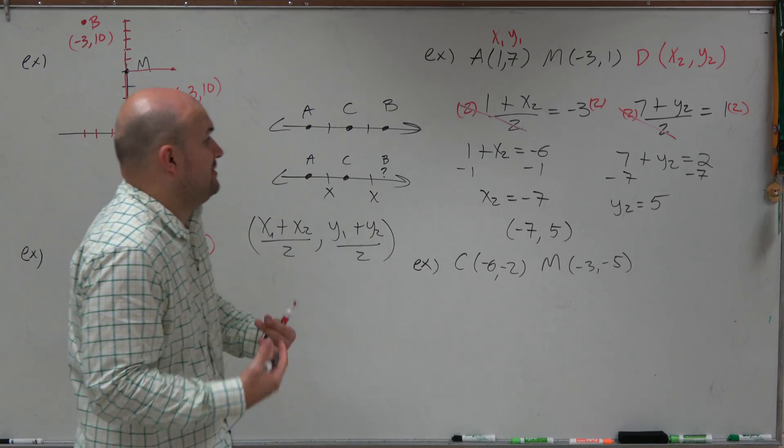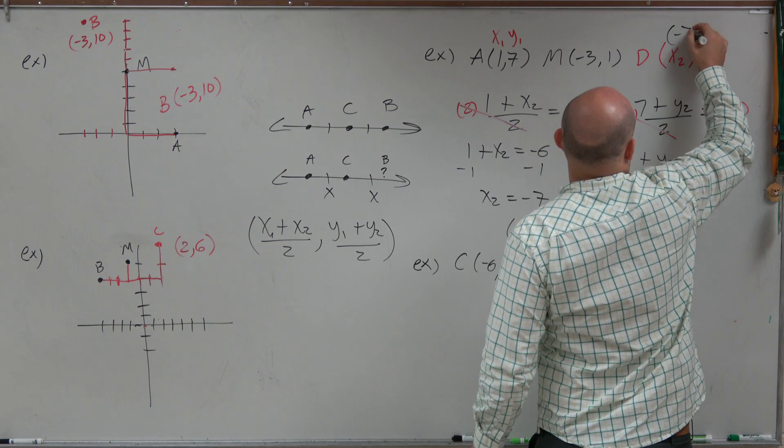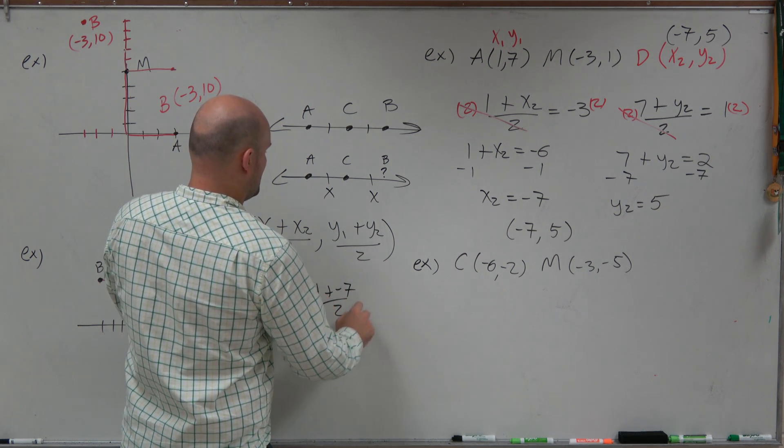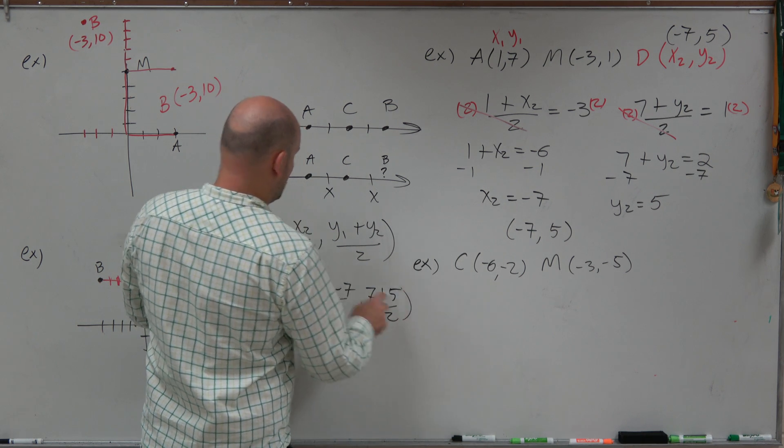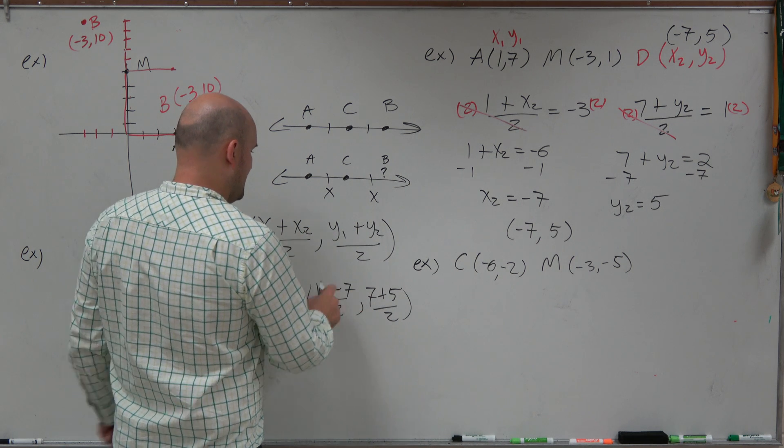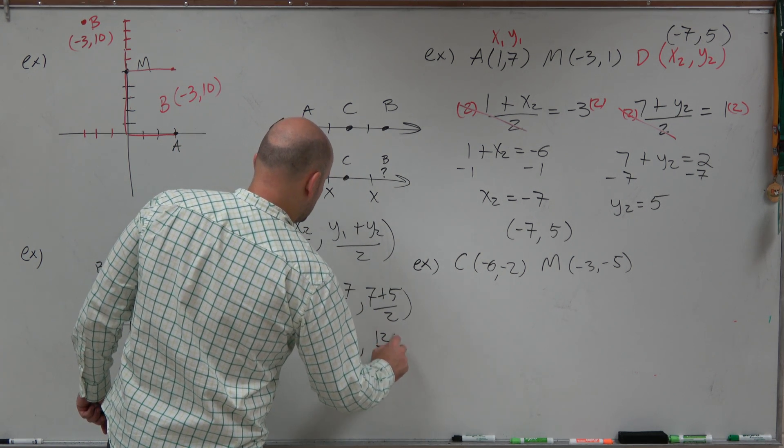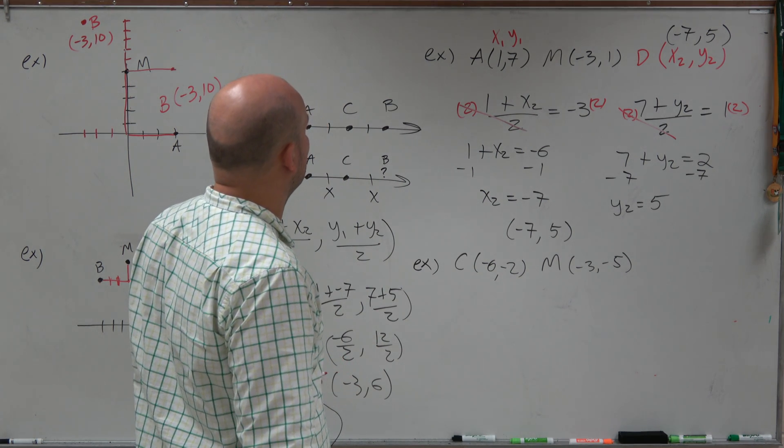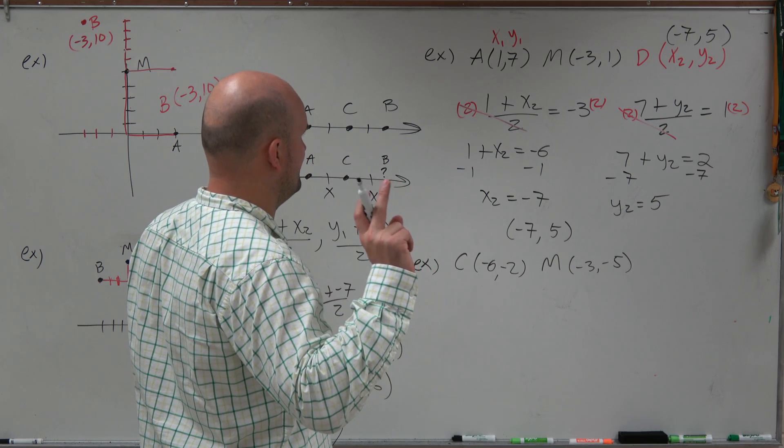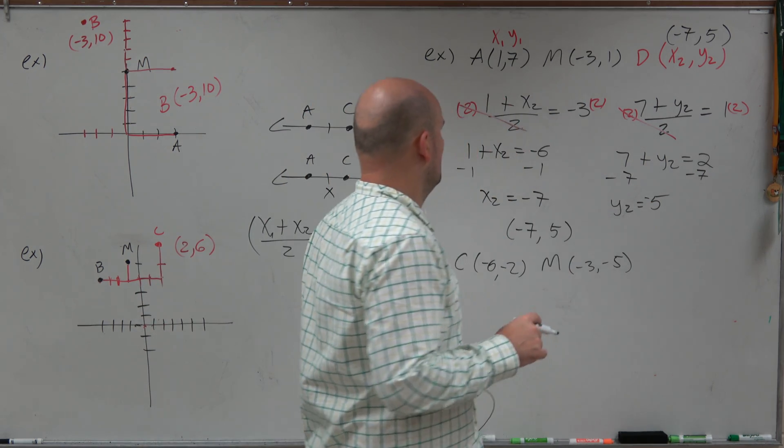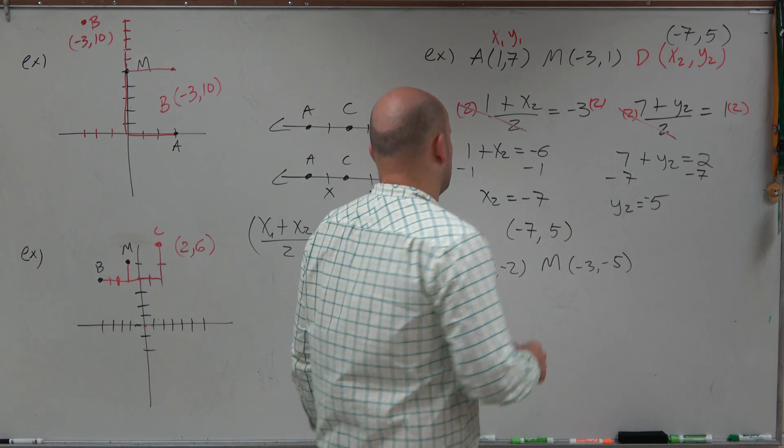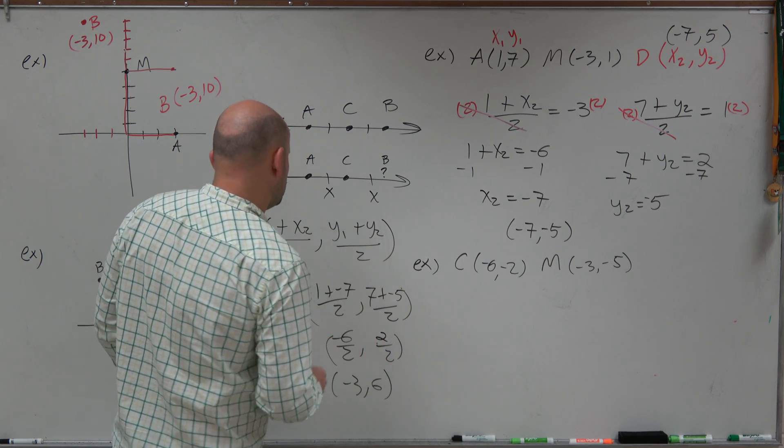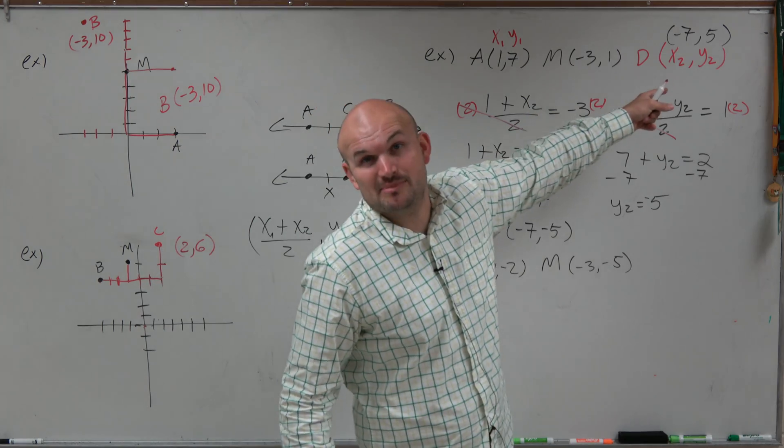And again, ladies and gentlemen, you can always check your work. We can always go back and say, did this actually work? Let's pretend this is negative 7 and negative 5. Let's go back and make sure this works. Let's add 1 plus negative 7 divided by 2 comma 7 plus negative 5 divided by 2, using the midpoint formula. That's x1, that's x2, y1, y2. And therefore, we get negative 6 divided by 2 and 2 divided by 2. So therefore, we get negative 3 comma 1. And you can see, ladies and gentlemen, that's exactly our midpoint. Very good.